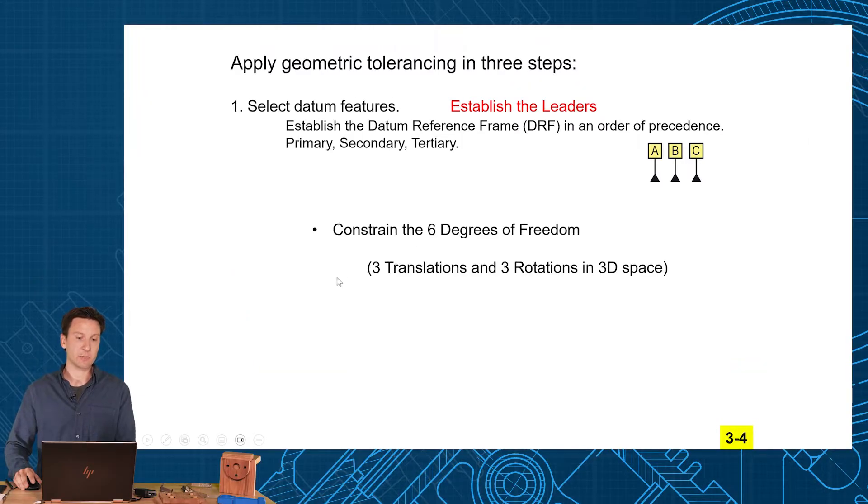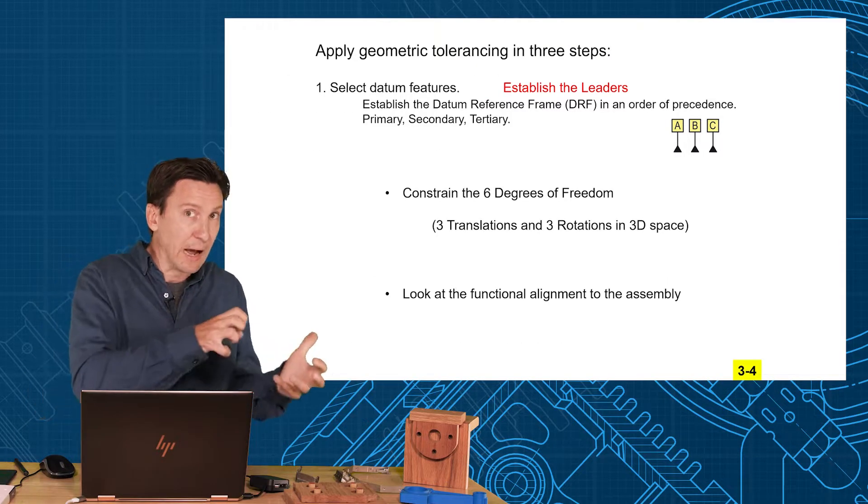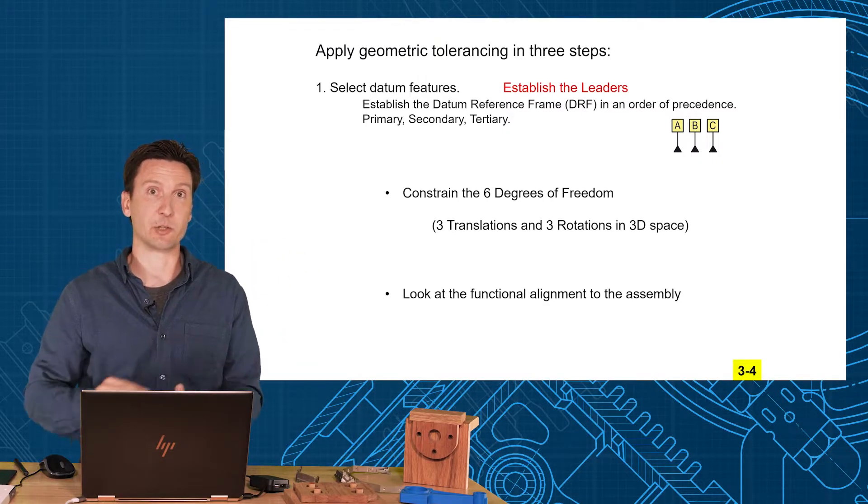Things to think about when you're selecting datum features is you want to constrain those six degrees of freedom. Every part has six degrees of freedom—three translations, three rotations. We want to constrain those when we select datum features. Then we want to look at the functional alignment. How does that part fit? How does it mount in the assembly?